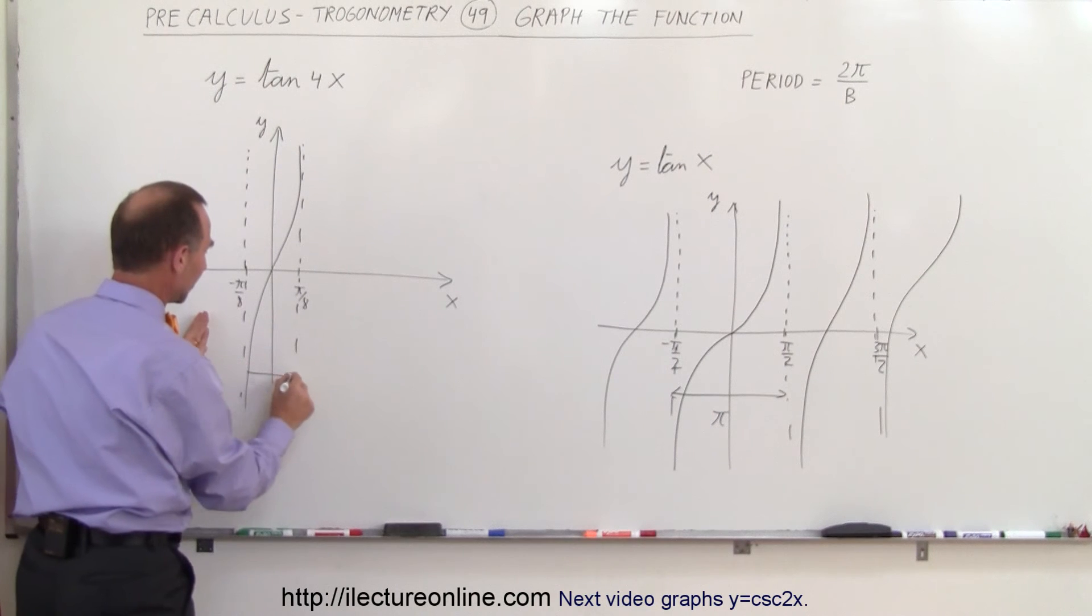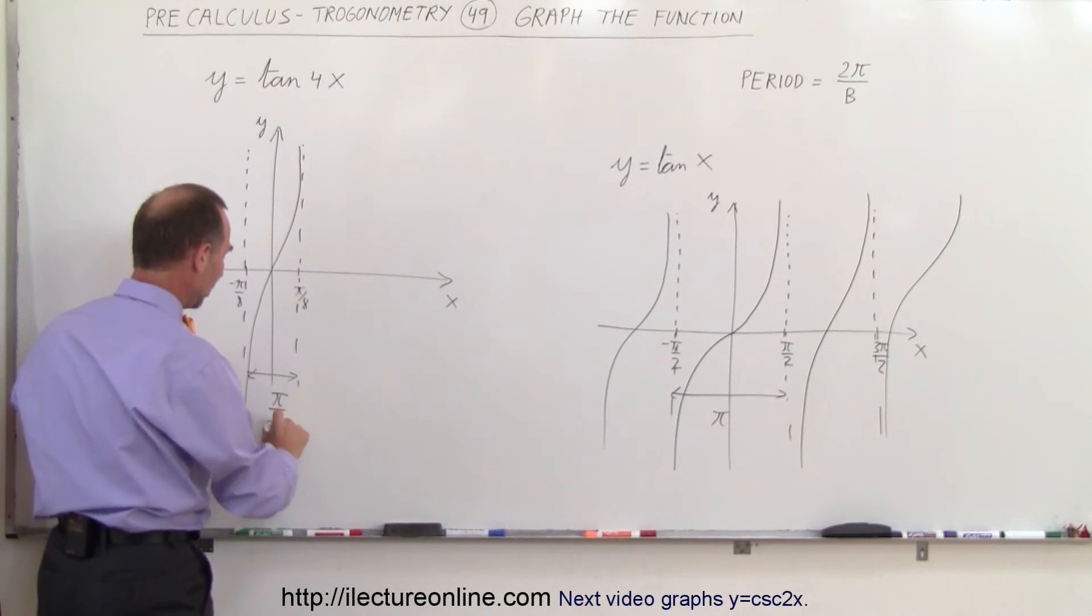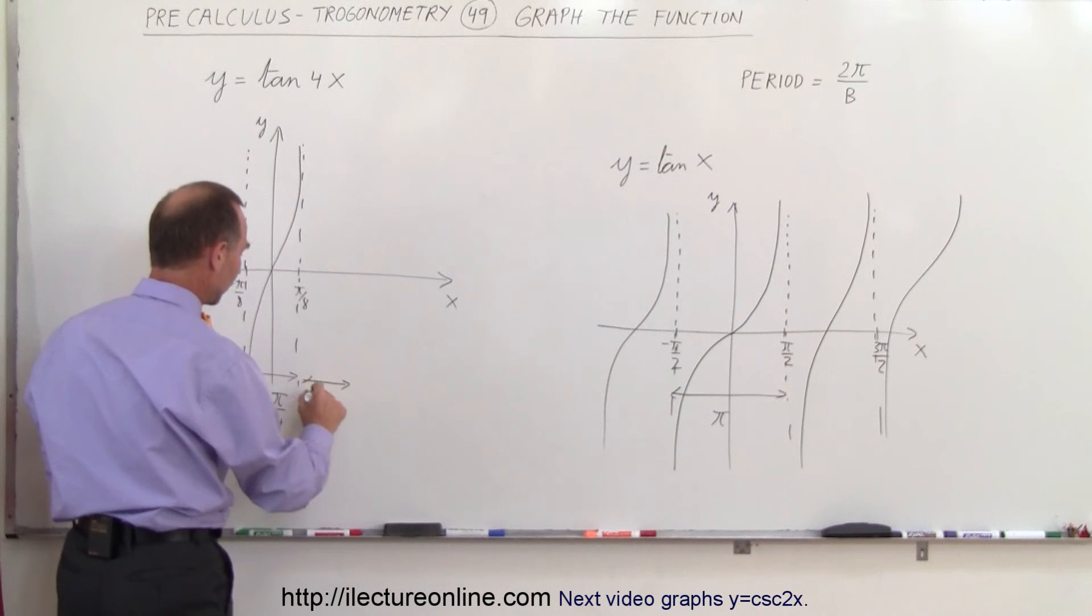Now notice that the period in this case, instead of being pi, is now going to be pi over 4, so the next period here will be pi over 4.